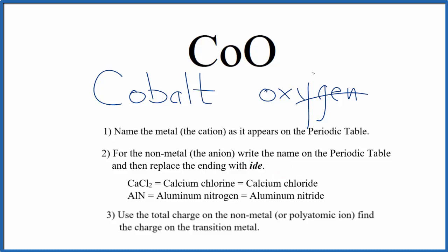So we get rid of this, write in ide, and so far we have the name cobalt oxide for CoO. But cobalt here, cobalt is a transition metal, so we need to write the charge on cobalt in the name here.